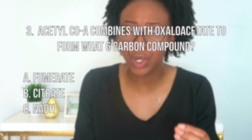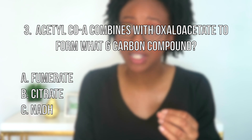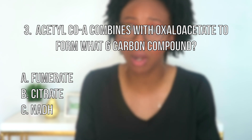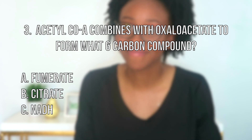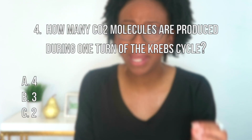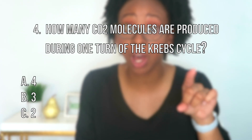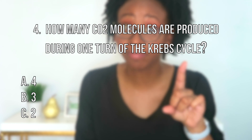Question number three: acetyl-CoA combines with oxaloacetate to form what six-carbon compound? If you mentioned citrate, that is the correct answer. Question number four: how many CO2 molecules are produced from one turn of the Krebs cycle? If you mentioned two, that is correct.